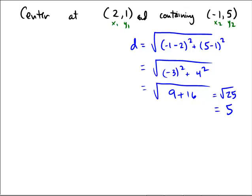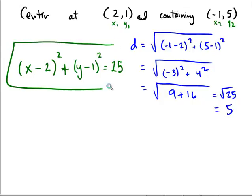So, the equation of the actual circle will be x minus the center's x coordinate of 2 squared plus y minus 1, which is the y coordinate of the center, equals the radius 5, but that's squared to be 25. And there's our final answer, x minus 2 squared plus y minus 1 squared equals 25.